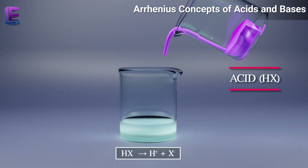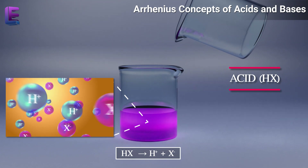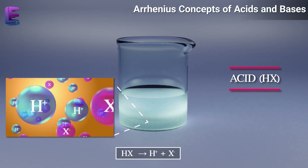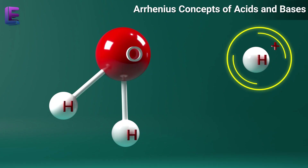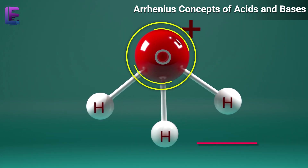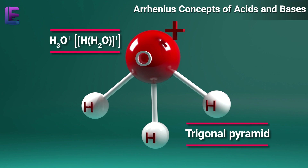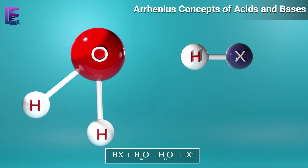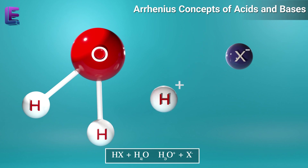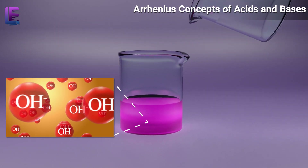The ionization of an acid H-x can be expressed as an equation: H-x gives rise to H-plus and X-minus ions. As the proton H-plus is a very reactive ion, it doesn't remain free in water. It binds to the oxygen atoms in water and forms the trigonal pyramid-shaped hydronium ion H-3O-plus. So H-x plus H-2O gives rise to H-3O-plus plus X-minus. In water, OH-minus ions also exist in ionized forms.